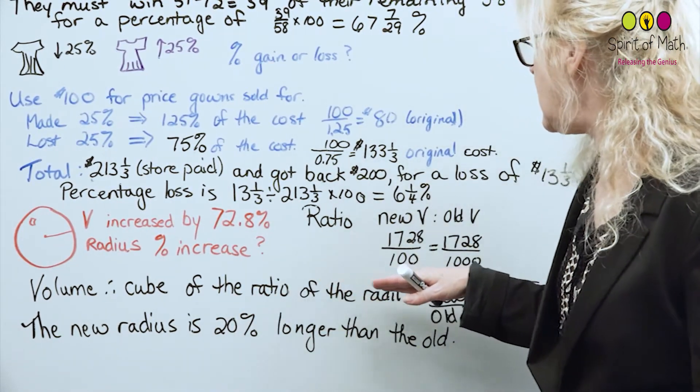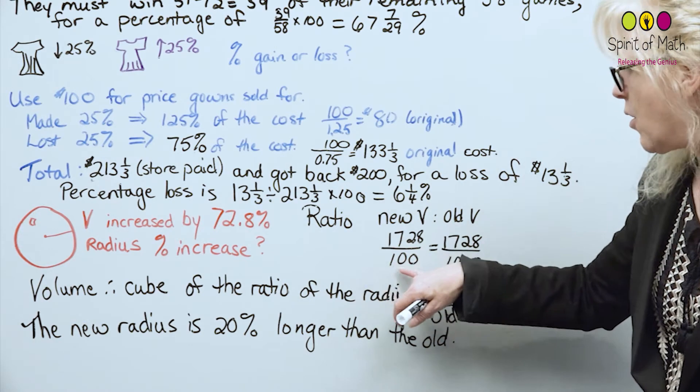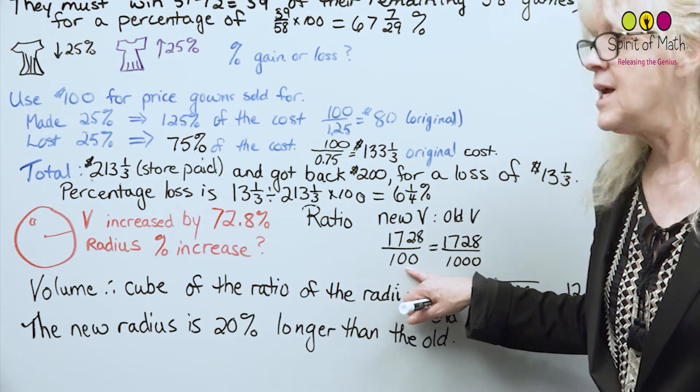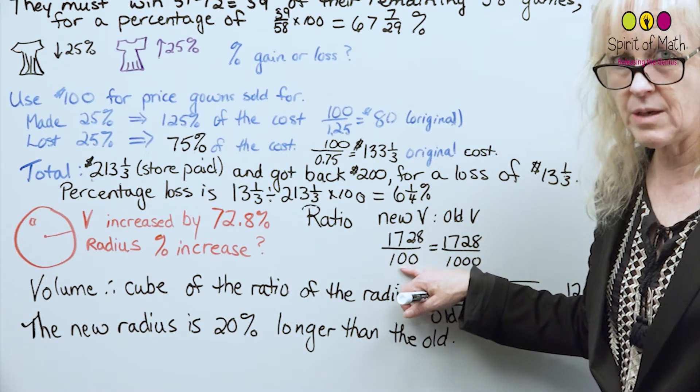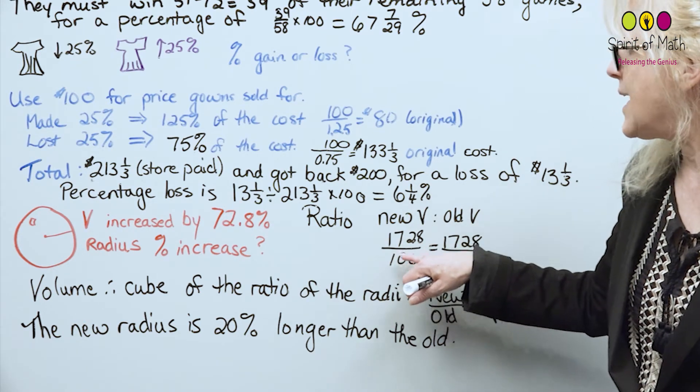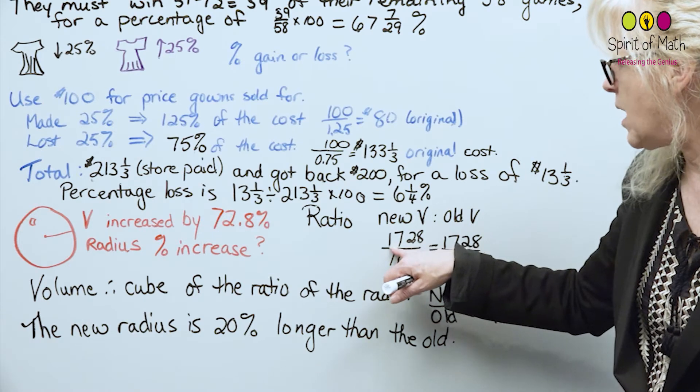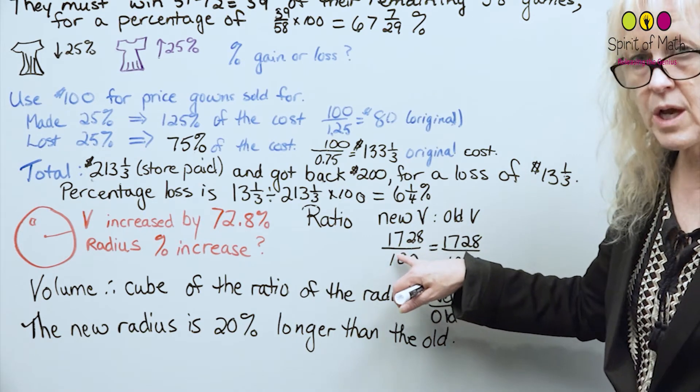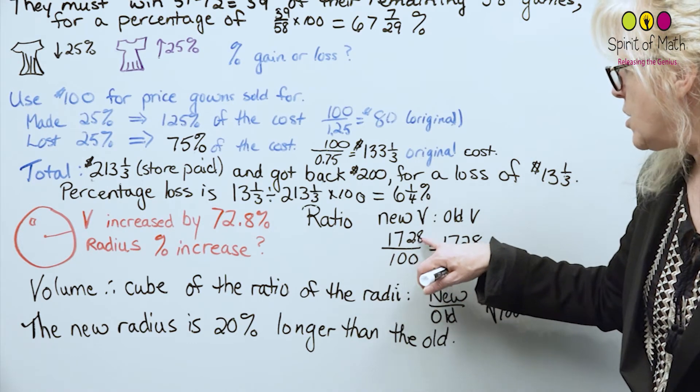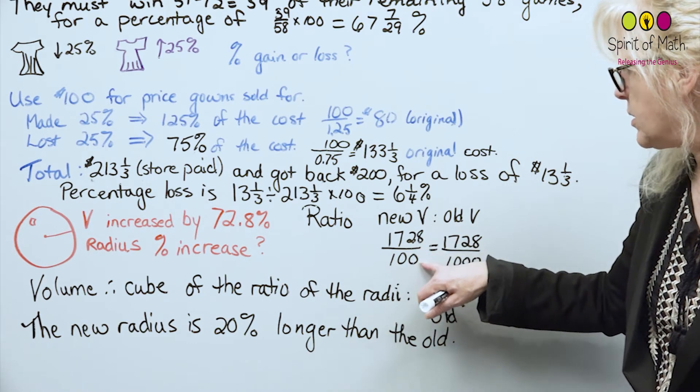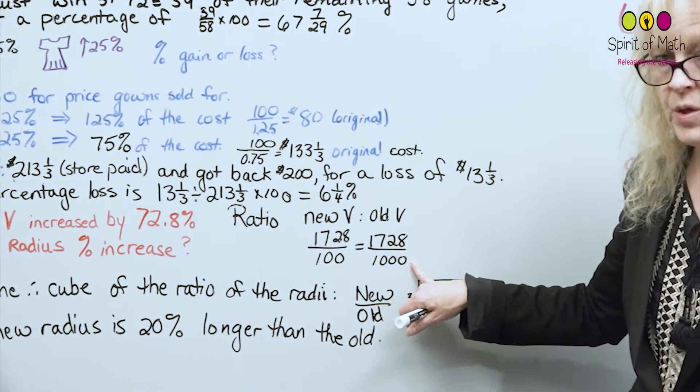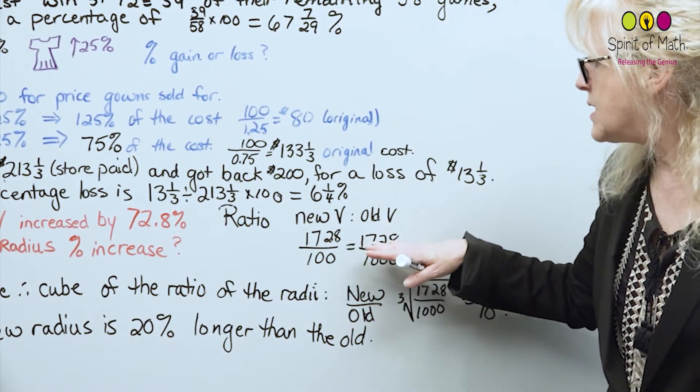If you take the new versus the old, the new is, if the old was 100, so again we set an amount, you do not have to set 100, 100 is set because it's easy to think about. Now if the old was 100, the new would be increased by 72.8, so it would be 172.8. You need that 100 plus that extra 72.8. And that's the ratio of the new to the old. And if we're going to take out that decimal, then it's 1728 over 1000. So that's the ratio of the sphere.